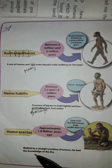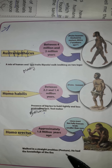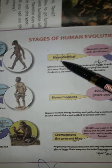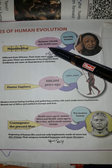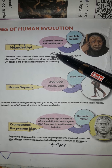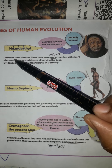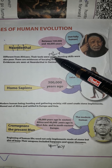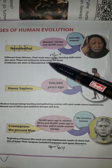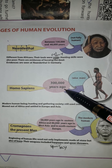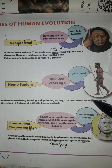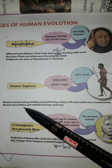Homo erectus: erect means straight — walked in a straight upright position and had knowledge of fire. Neanderthal: between 1,30,000 and 40,000 years ago — different from Africans, tools were crude and not sharp, hunting skills were poor. Evidence for burying the dead was found in Germany. Homo sapiens: 3 lakh years ago — modern humans, hunting and gathering society, still using crude stone tools, found in Africa and settled in Eurasia.